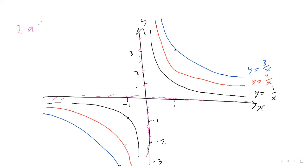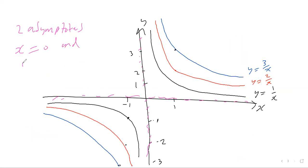To summarize: all graphs of the form y equals a over x share the same two asymptotes — x equals zero and y equals zero. This applies equally to y equals 1 over x, y equals 2 over x, y equals 3 over x, and all a over x graphs for real values of a.